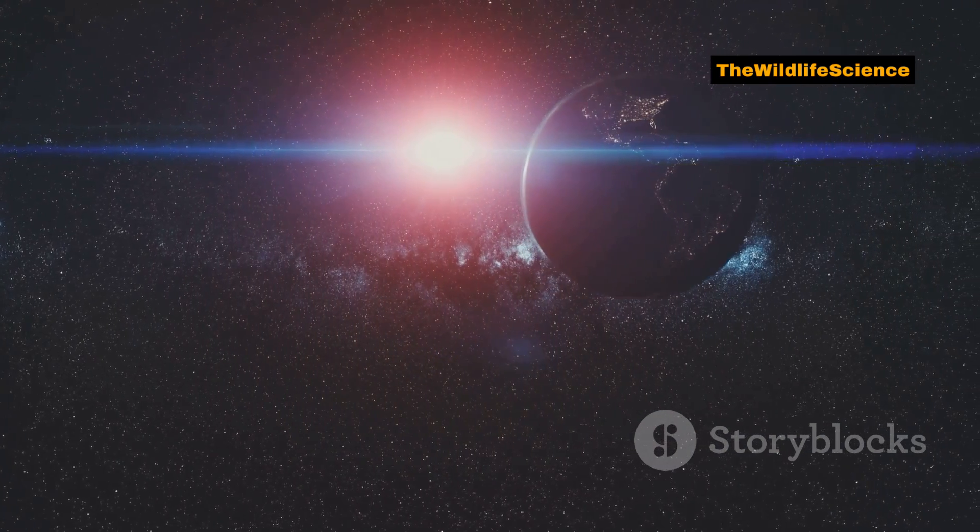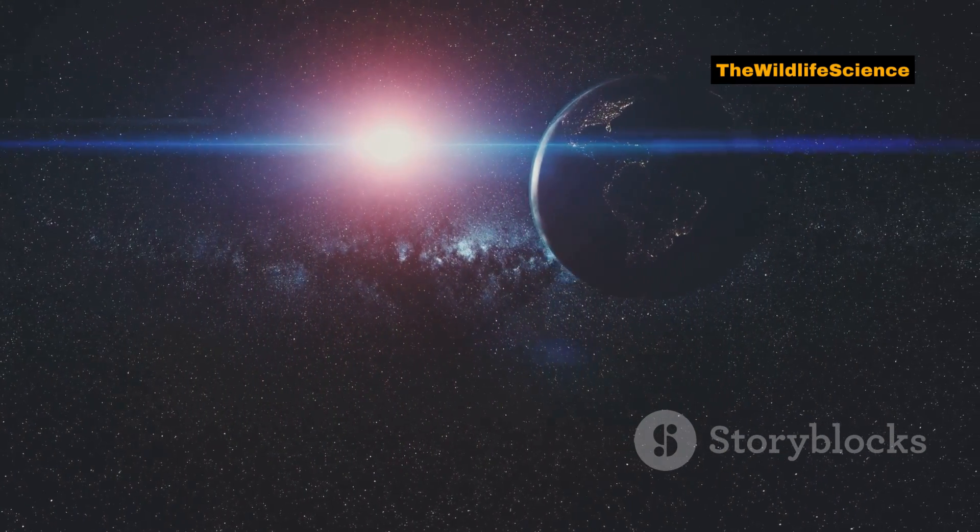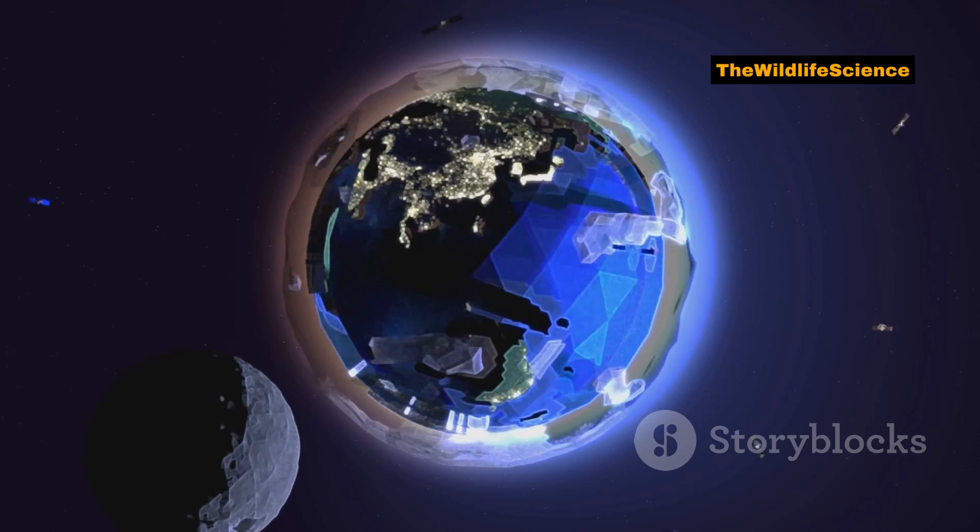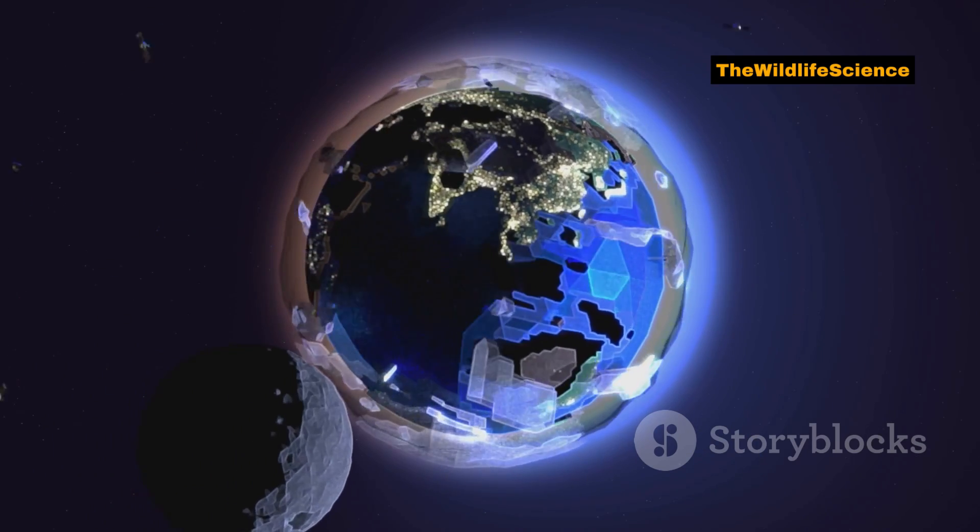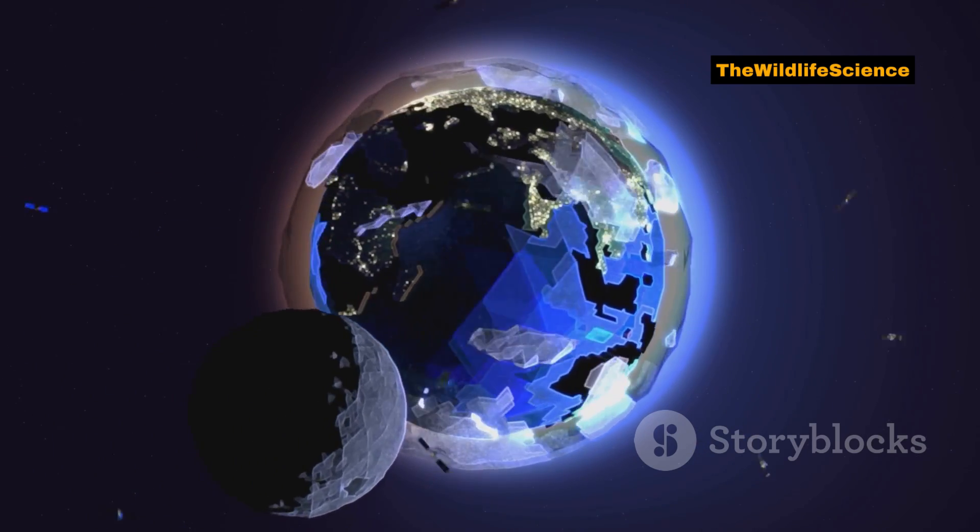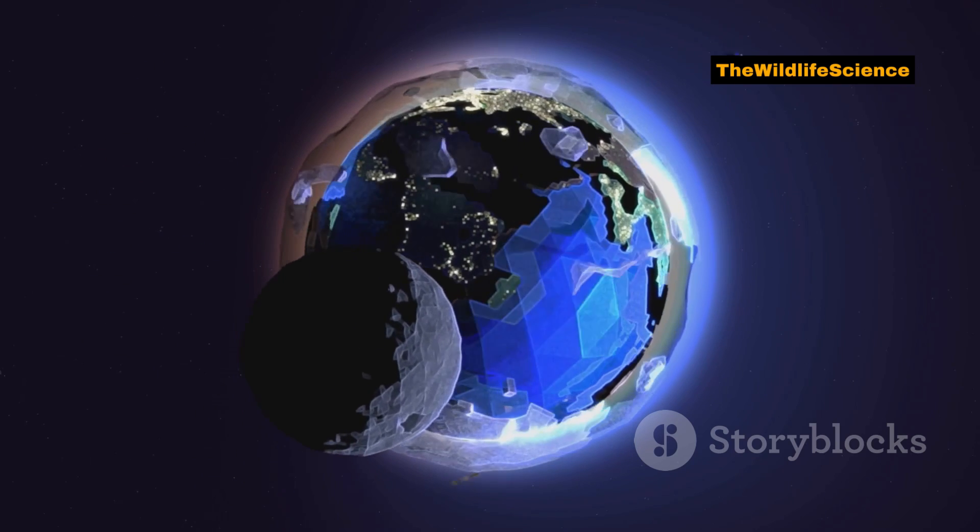Unlike our main moon, it doesn't orbit the Earth directly. Instead, it follows a looping, synchronized path around the sun, always staying close to our planet, as if shadowing us through space.